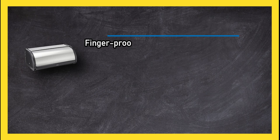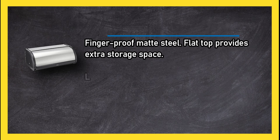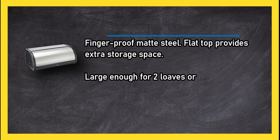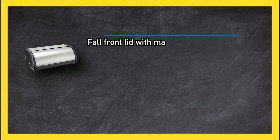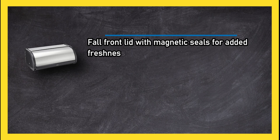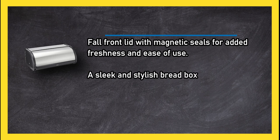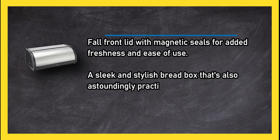Fingerproof matte steel. Flat top provides extra storage space. Large enough for two loaves or more. Fall front lid with magnetic seals for added freshness and ease of use. A sleek and stylish bread box that's also astoundingly practical.